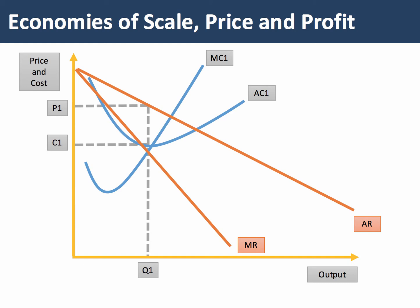Here's our initial diagram — we're going to assume the firm is a profit maximiser. It's going to find an output where marginal cost meets marginal revenue. Take it up to the demand curve and charge price P1; the unit cost using the average cost curve is C1. We can show that this firm is making supernormal profits equal to the shaded green area.